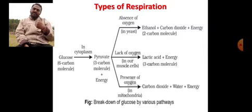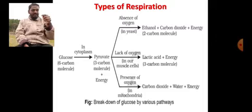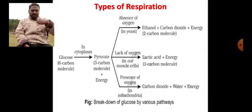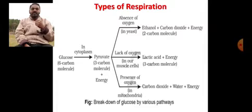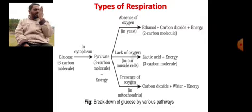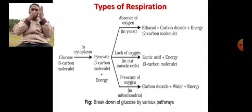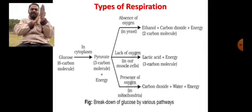Then, normal glucose is converted into pyruvate, and pyruvate in the presence of oxygen is well digested — that happens in the mitochondria. By that time, carbon dioxide is released out and water vapor is also formed. To identify that we are releasing carbon dioxide as well as water vapor: take a mirror and breathe out directly onto it, and you can find a foggy structure on the mirror.